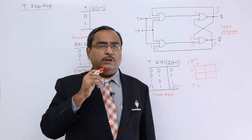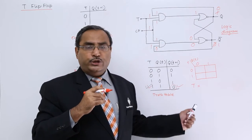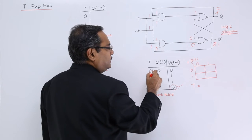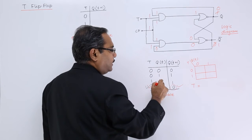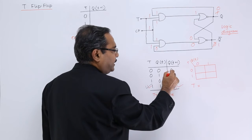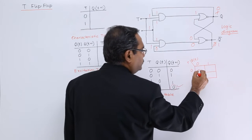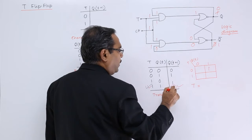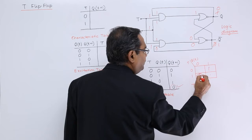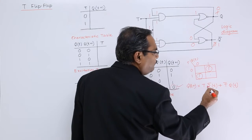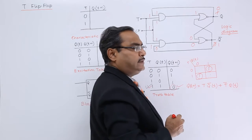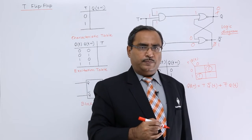Now let us derive the characteristic equation of T flip-flop. We have the combinations 0,0 | 0,1 | 1,0 | 1,1, so four combinations are there. Plotting these, we get the characteristic equation as: Q(t+1) = T·Q̄t + T̄·Qt. That is the characteristic equation of T flip-flop.